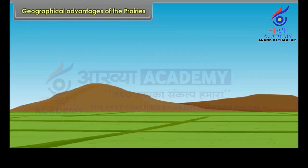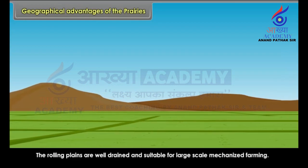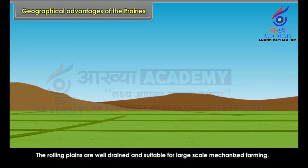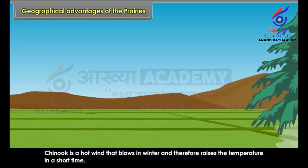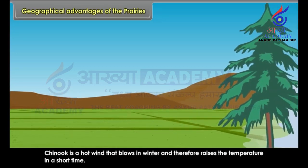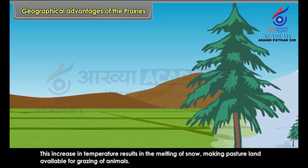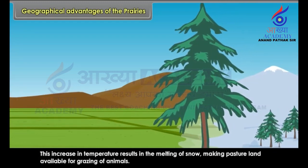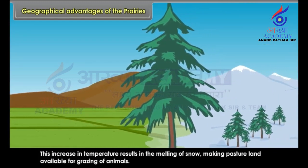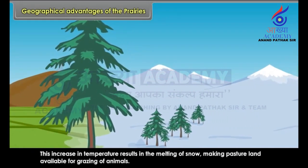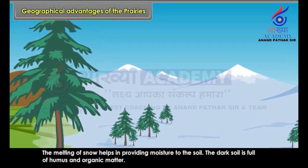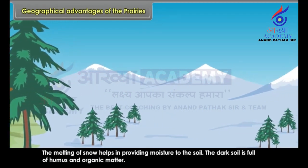The rolling plains are well-drained and suitable for large-scale mechanized farming. Chinook is a hot wind that blows in winter and therefore raises the temperature in a short time. This increase in temperature results in the melting of snow, making pasture land available for grazing of animals.